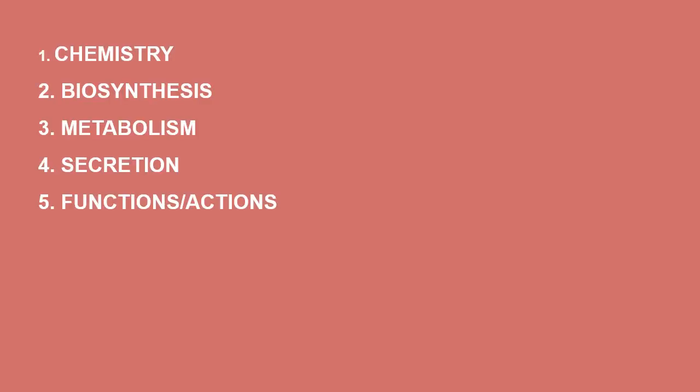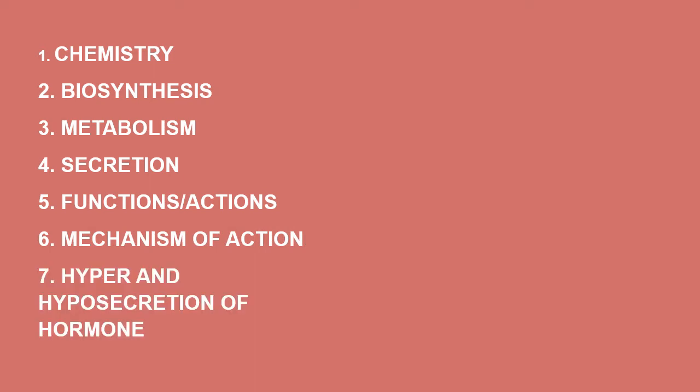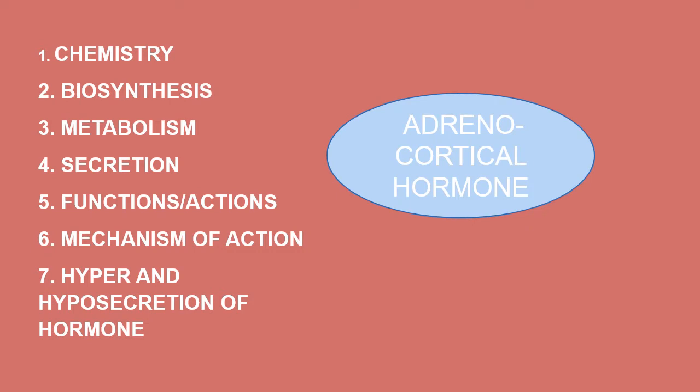Any hormone should be discussed under six or seven headings: the chemistry of the hormone, how it is synthesized, how and when it is secreted, mechanism of action at the target organ, physiological functions, how it is metabolized and excreted, and diseases associated with hyper and hyposecretion. All these headings will now be studied for the adrenocortical hormones.